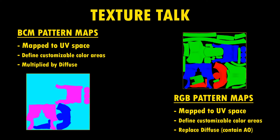There's also support for pattern maps, one of Scenestro's very own texture types that allow for color customization in-game. There are two kinds of pattern maps: BCM pattern maps and RGB pattern maps. With BCM pattern maps, you can define areas of your model by coloring them blue, cyan, and magenta. Those colors will then be dynamically replaced when the player enters the color selection screen and multiplied by the diffuse map. RGB pattern maps work almost like that, but you define areas by coloring them red, green, and blue. Contrary to BCM pattern maps, they don't require an additional diffuse map, since they can contain baked ambient occlusion.